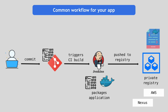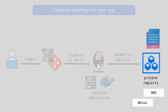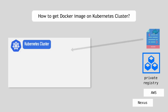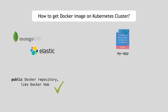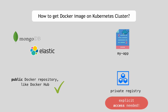Now that you have your Docker image in a private registry, the question is how do you get this Docker image onto your Kubernetes cluster? For images like MongoDB or Elastic, it's straightforward because they're hosted in a public repository like Docker Hub and anyone can pull them without access permissions. But your own application lives in a private repository and needs explicit access from the cluster, so how do you pull application images from a private repository on Kubernetes?